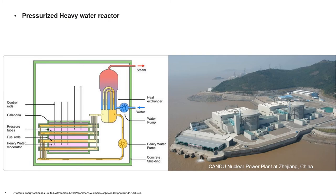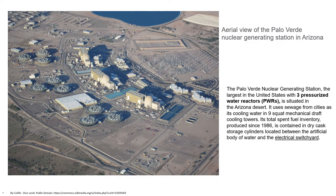Here is an example of a pressurized heavy water reactor — the CANDU nuclear reactor at Zhejiang, China. Here is shown the aerial view of Palo Verde nuclear generating station in Arizona, the largest in the United States with three pressurized water reactors situated in the Arizona desert. It uses sewage from cities as its cooling water in nine square mechanical draft cooling towers. Its total spent fuel inventory produced since 1986 is contained in dry cask storage cylinders located between the artificial body of water and the electrical switchyard.